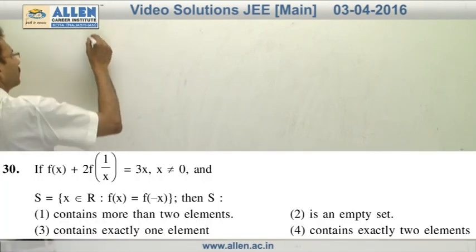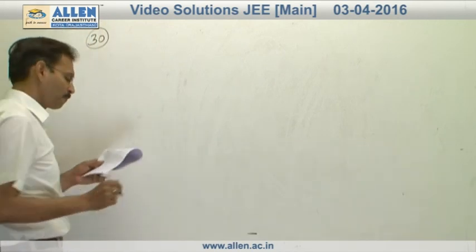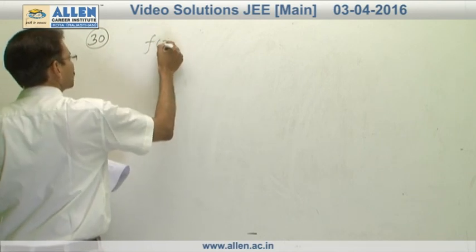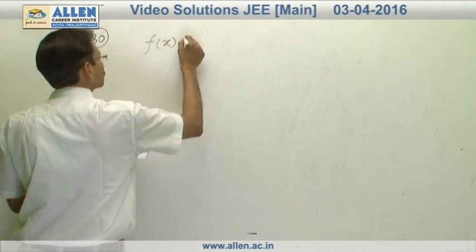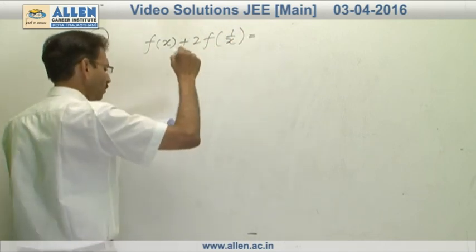Question number 30. First of all, we will calculate the function f of x plus 2 f of 1 upon x is equal to 3x.